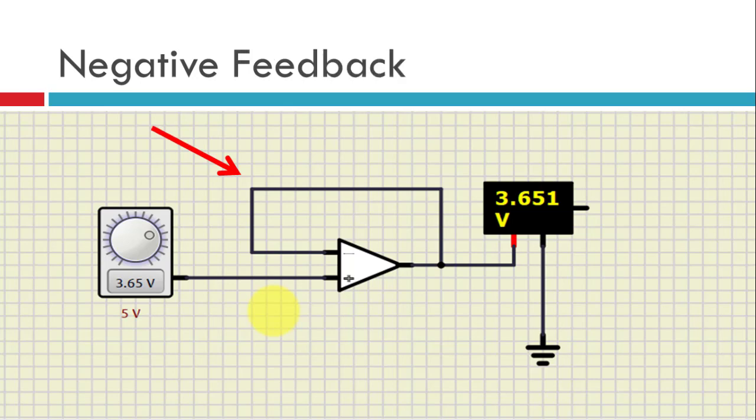Now as seen in the op-amp, we have two inputs. One is the non-inverting input which is given by the plus sign. We are applying the input at the non-inverting end with this DC source and then we are using the negative feedback.